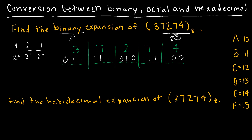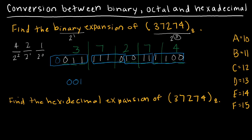When I write my final solution, I'm going to group these in groups of 4, starting from the right side. If I end up with a group of 3, I can always add an extra 0. So my solution is: 0, 0, 1, 1, 1, 1, 1, 0, 1, 0, 1, 1, 1, 1, 0, 0. Make sure you specify that as base 2.